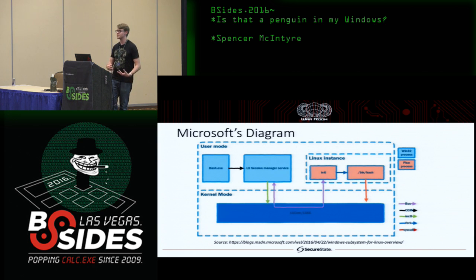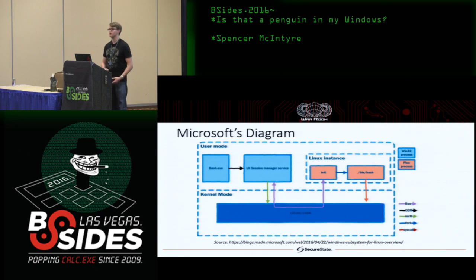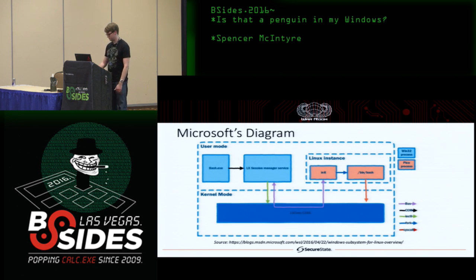The first time it runs, it initializes all the necessary information, starts the init process, and ultimately the native 64-bit bash ELF executable runs. This allows you to run things like apt-get, Python, sed, awk, grep — all your favorite Linux command-line utilities.